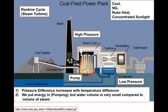One of the very neat things about the Rankine cycle is we can heat it any way we want. We can use coal, which is done in about half of the facilities in the United States. We can use natural gas, which is cleaner. We can use nuclear energy. We could use concentrated sunlight. You could do anything to make it warm.